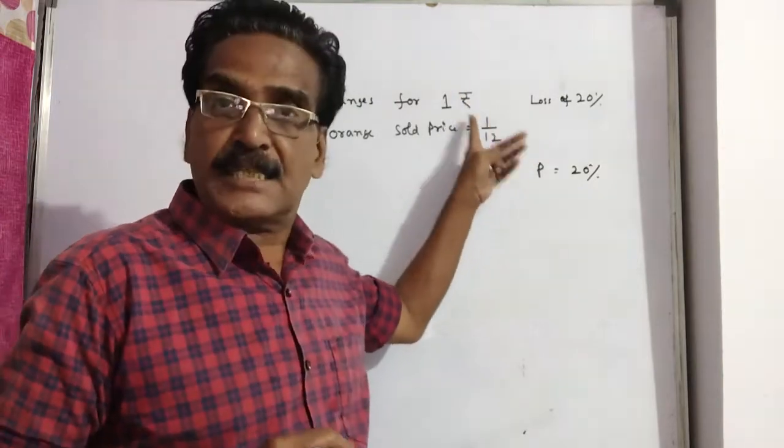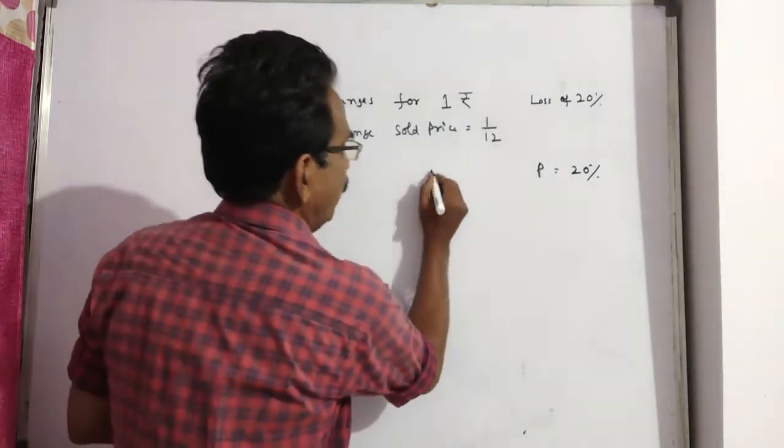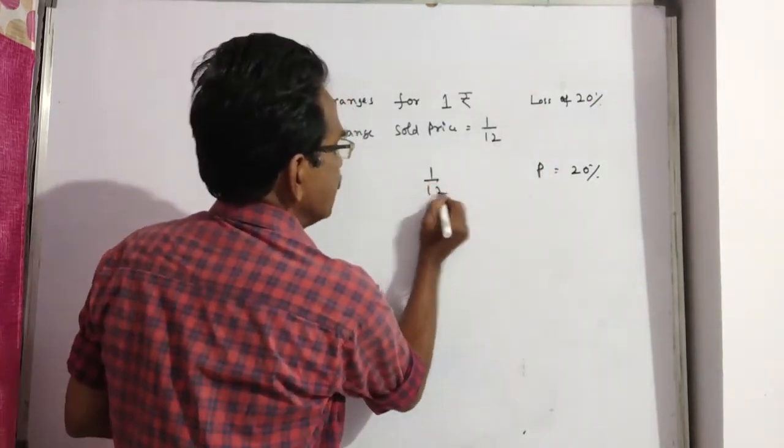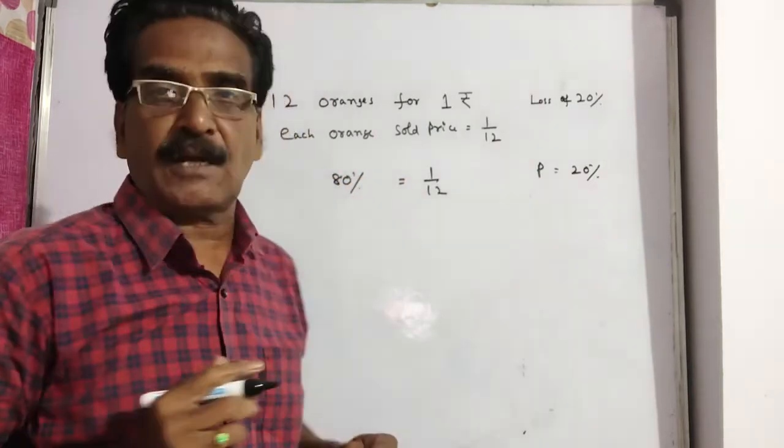If he sells at this price, he is getting a loss of 20%. That means this 1 by 12 is equal to 80% of the cost price because he is getting 20% loss.